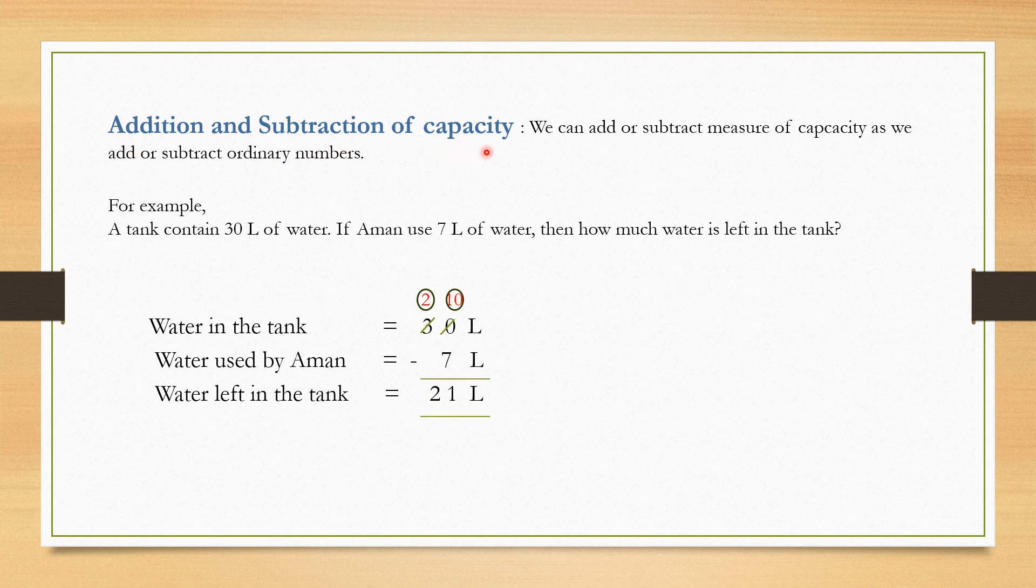Addition and subtraction of capacity: We can add or subtract measure of capacity as we add or subtract ordinary numbers. For example, a tank contains 30 liter of water. If Aman uses 7 liter of water, then how much water is left in the tank? We need to subtract 7 liter from 30 liter. Water in the tank: 30 liter. Water used by Aman: 7 liter.